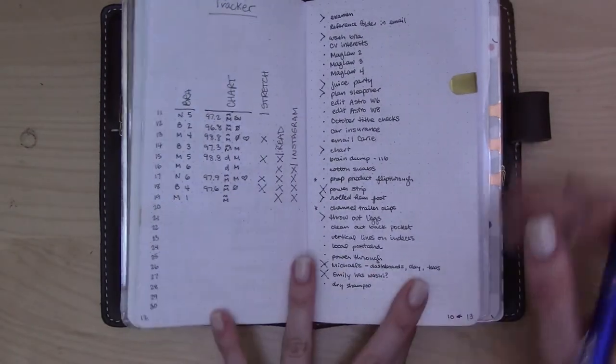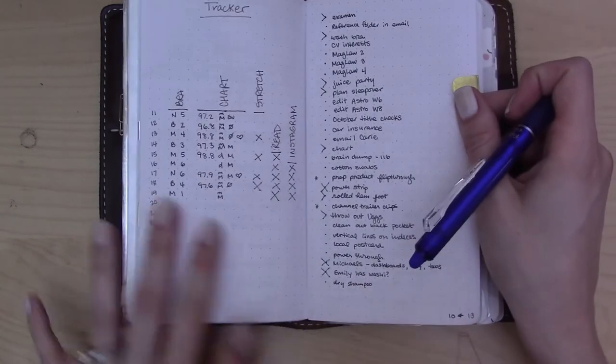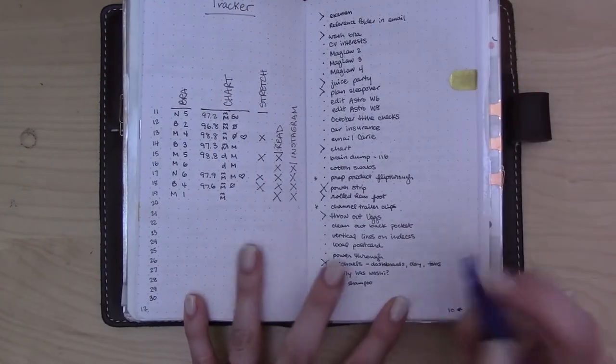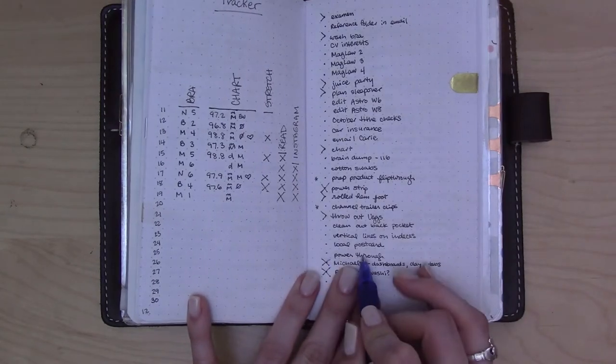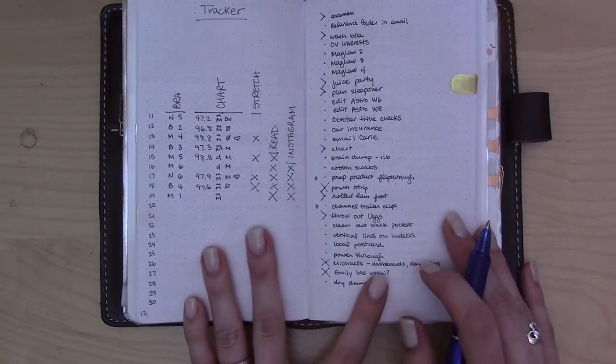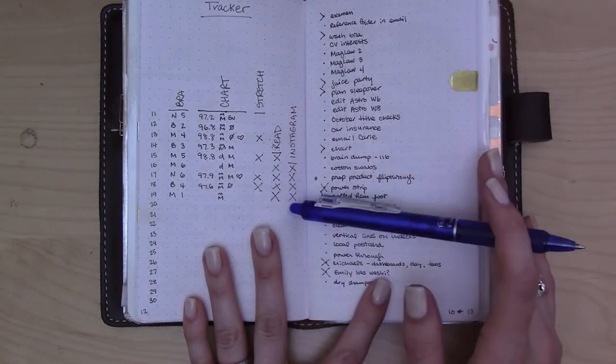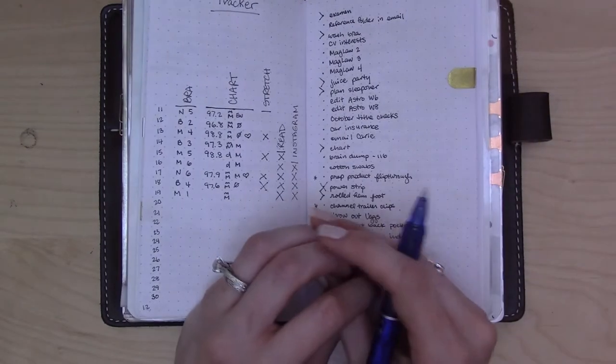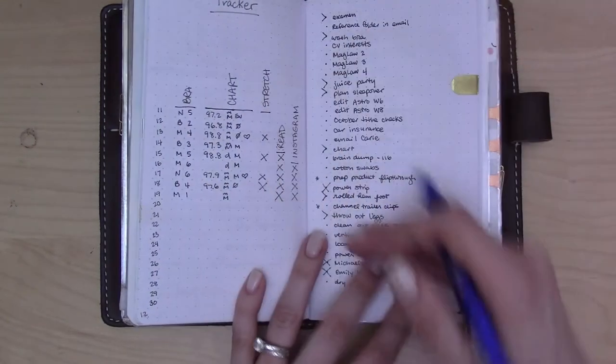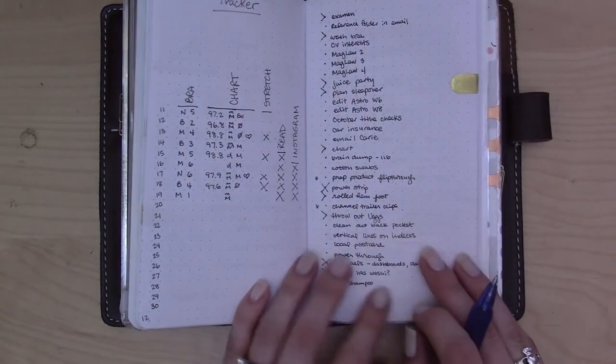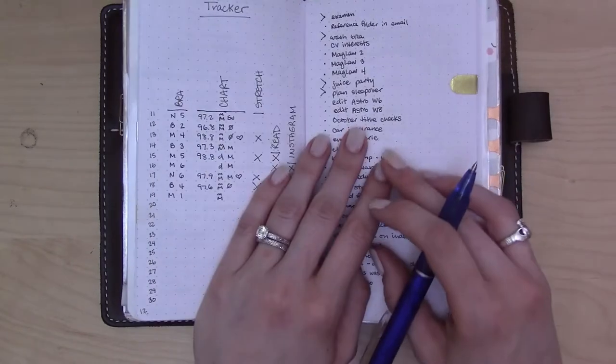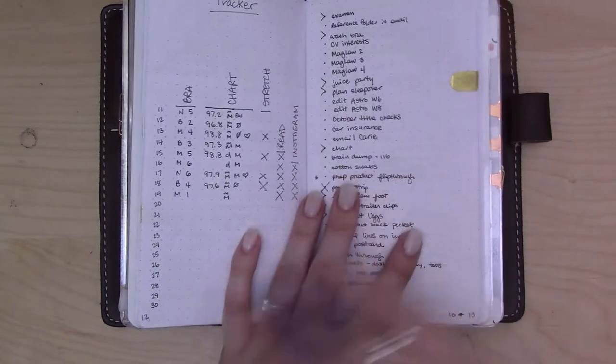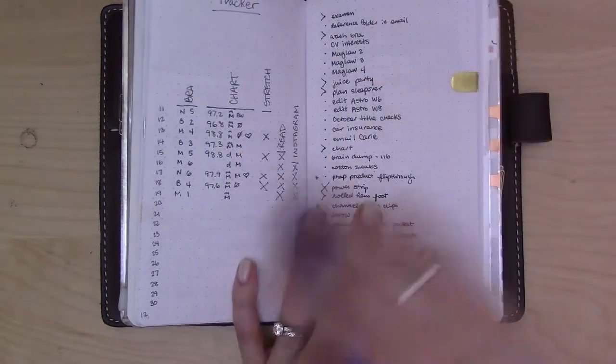So my running to-do list has gotten pretty long. A lot of these things are very small things. I've put here as a task 'power through,' meaning I'm thinking that possibly after filming this and uploading it, or maybe tomorrow if I have some time, I'm going to try to set aside a chunk of time to just get as many of these done as I can, because a lot of them are very short and I've been kind of putting some of them off a little bit. So I figure I might get them all done at once and not even bother migrating them, just get them out of the way.